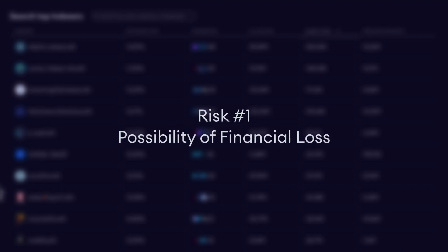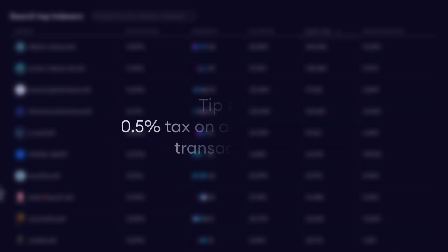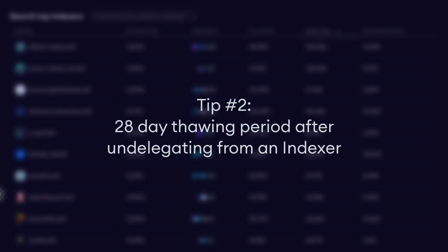There is a possibility of financial loss. While delegating aims to earn you rewards, it's possible that you might earn less than expected, or in some cases less than the amount you initially staked, especially if the indexer performs poorly or if network conditions change. Indexers have the ability to change their query fee cut and indexing reward cut at any time, meaning the APR you initially calculated could change, affecting your expected returns. Every delegation transaction incurs a 0.5% tax, and there's a 28-day thawing period when undelegating, during which you will not earn any rewards.